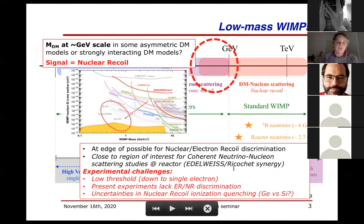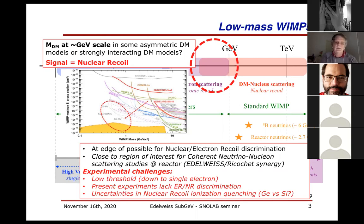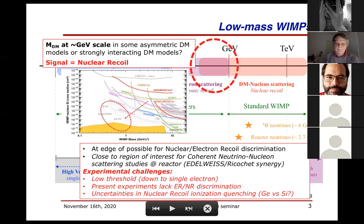Dark matter at the GeV scale sometimes appears in asymmetric dark matter models, where the signal is a nuclear recoil in your detector. The challenge is pushing for the lowest possible threshold, and discriminating nuclear and electron recoil is very difficult because you have very small signals. Also, the response to nuclear recoil in ionization is unknown in germanium and silicon — measurements need to be confirmed because there seem to be inconsistencies between the behavior of germanium and silicon at low mass.